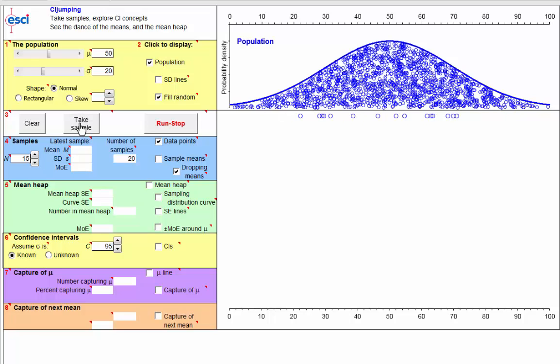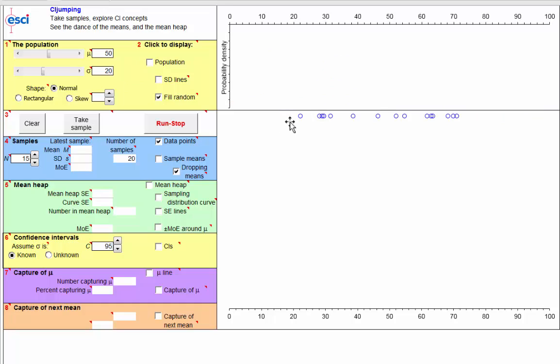Note that we're running a simulation in the computer, so we're privileged. We can see the population. Usually, a researcher only sees a single sample, and that's all we have to go on.